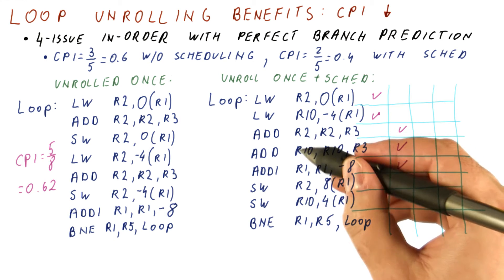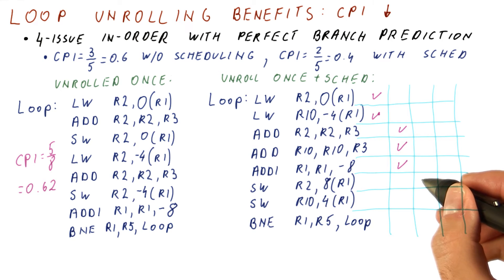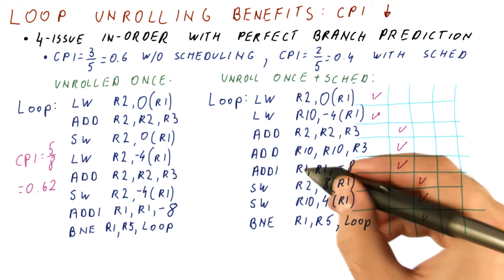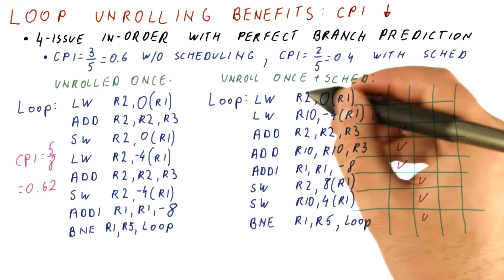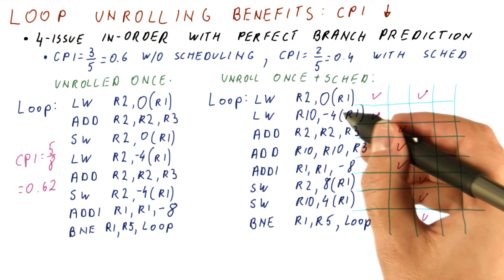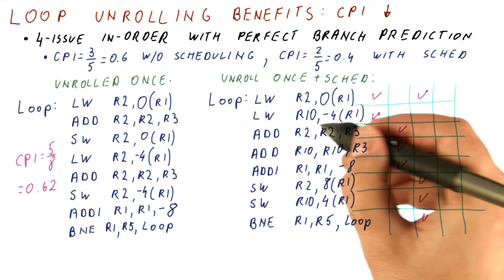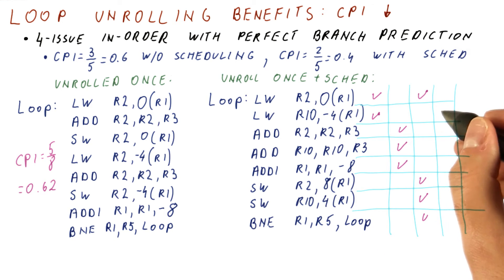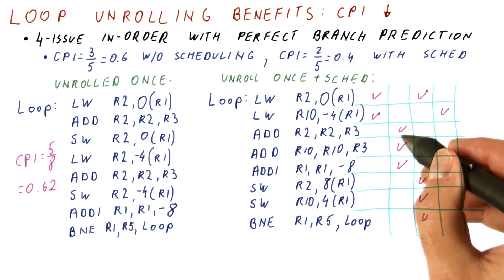Then the stores here have to wait for the results of the add, so they cannot proceed in the same cycle. However, they can be done in the next cycle. And so can the branch, because the R1 has been produced. And so can the load, because R1 has been produced. And unfortunately, in this cycle, we cannot do this load, because we already executed four things. So unfortunately, that load is done in the next cycle, after which we get the same schedule as here.